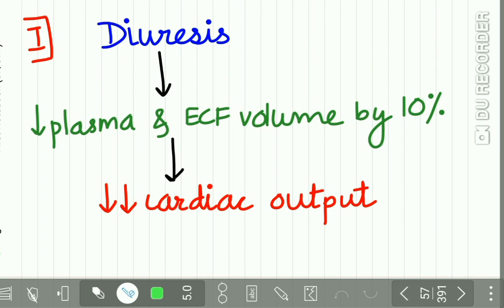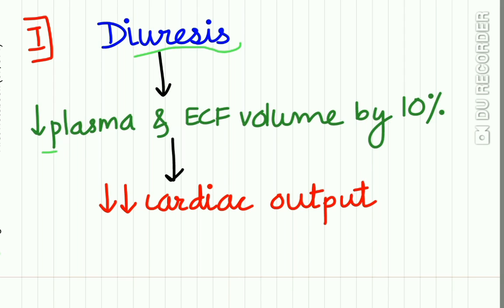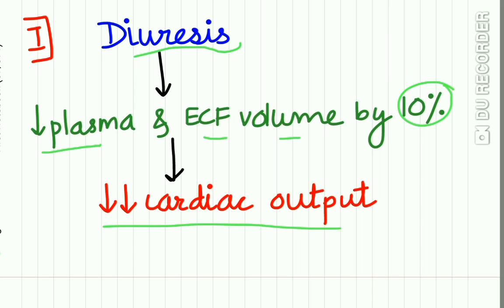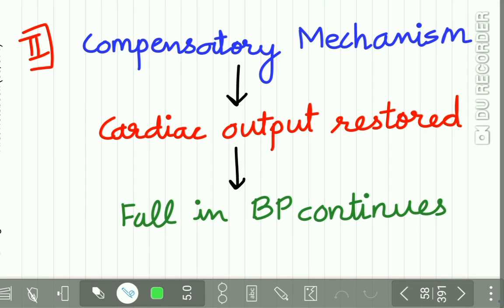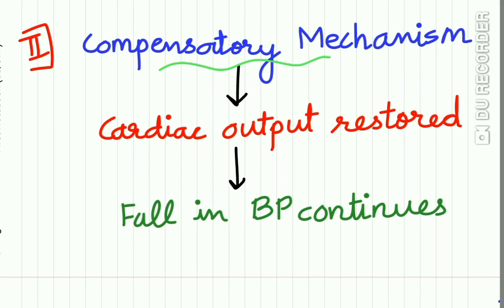Diuresis is the loss of water and sodium in urine. This causes a 10% decrease in plasma and extracellular fluid volume, which decreases cardiac output. A compensatory mechanism is then activated, regaining the lost sodium and plasma volume, helping restore cardiac output.